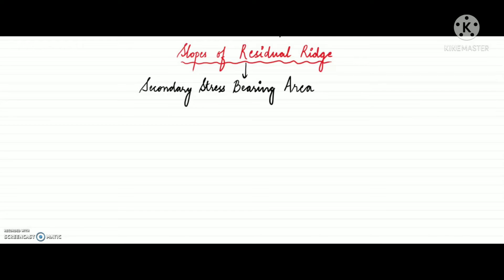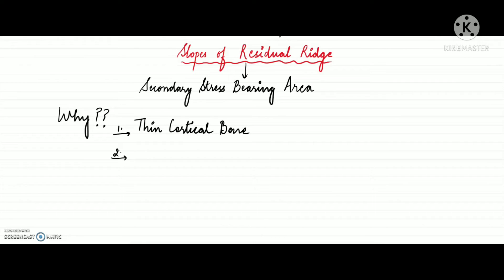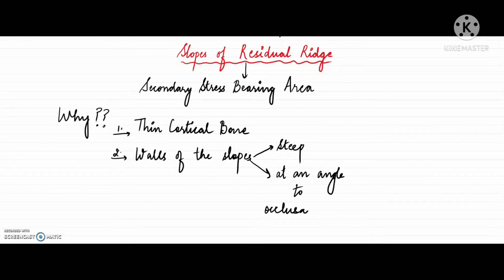The slope of the residual ridge is considered a secondary stress-bearing area, not a primary stress-bearing area. This is because it has thin cortical bone, and the walls of the slopes are steep and at an angle to the occlusal forces. As discussed earlier, structures at an angle to occlusal forces are not good candidates for providing support compared to structures nearly perpendicular to occlusal forces. Hence, the slopes of the residual ridge are considered secondary stress-bearing areas.